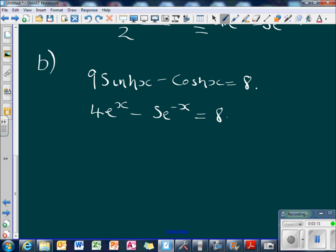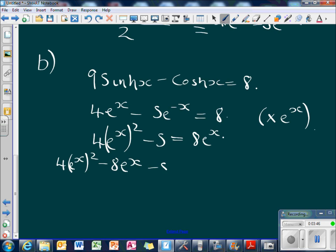You then want to try and turn it into a quadratic by times and through by e to the x. So that will give you 4 e to the x squared minus 5 equals 8 e to the x. Then get it into a quadratic equation, so you get 4 e to the x squared minus 8 e to the x minus 5 equals 0.